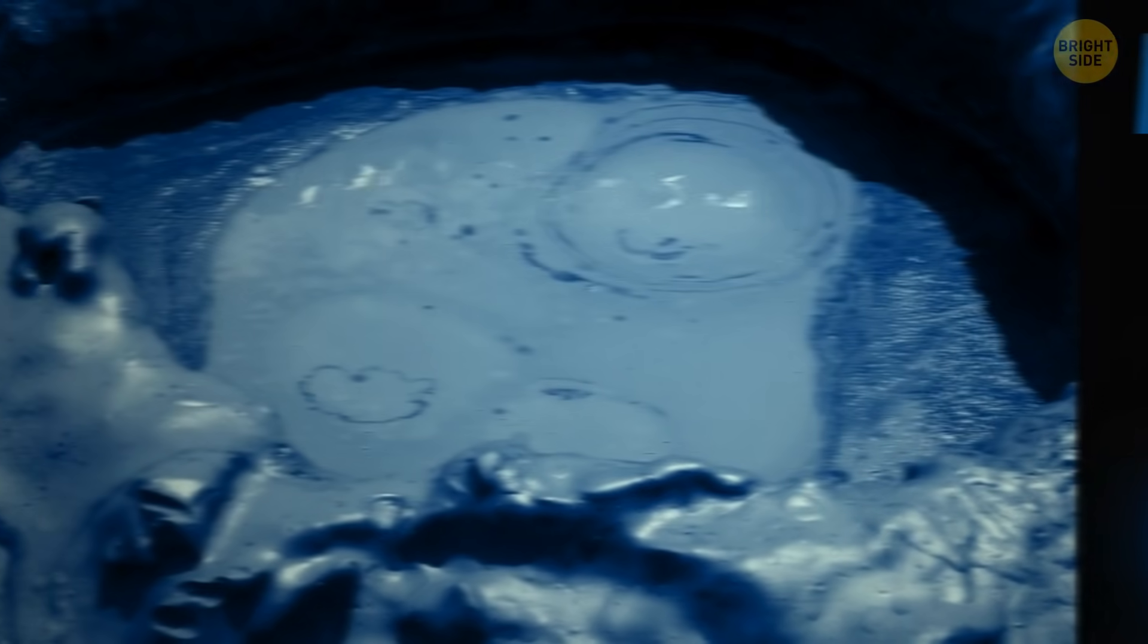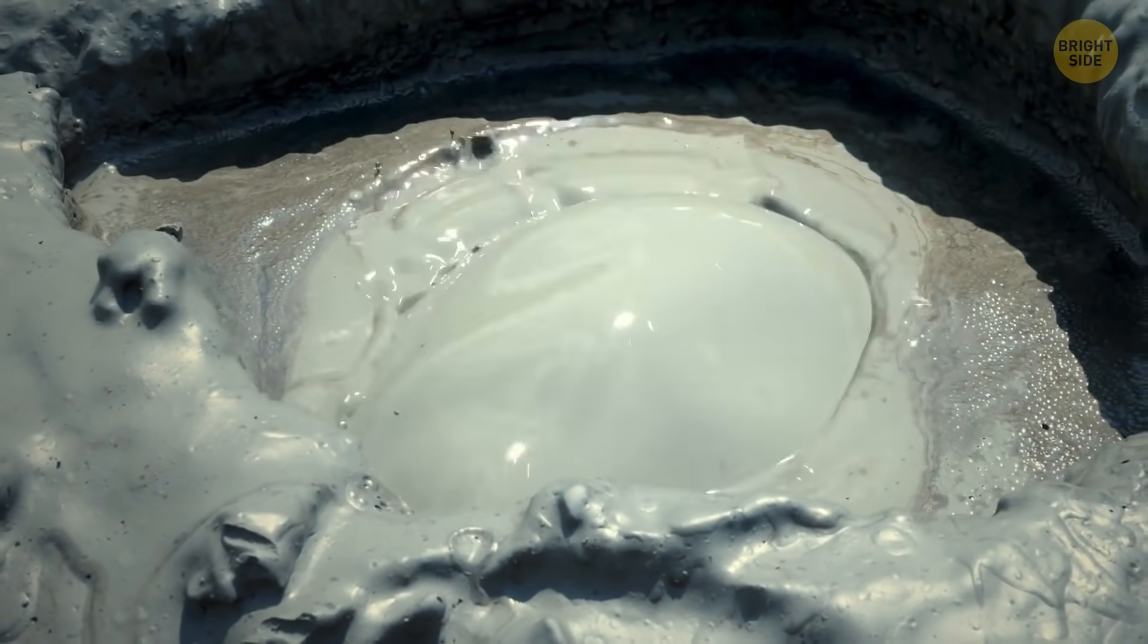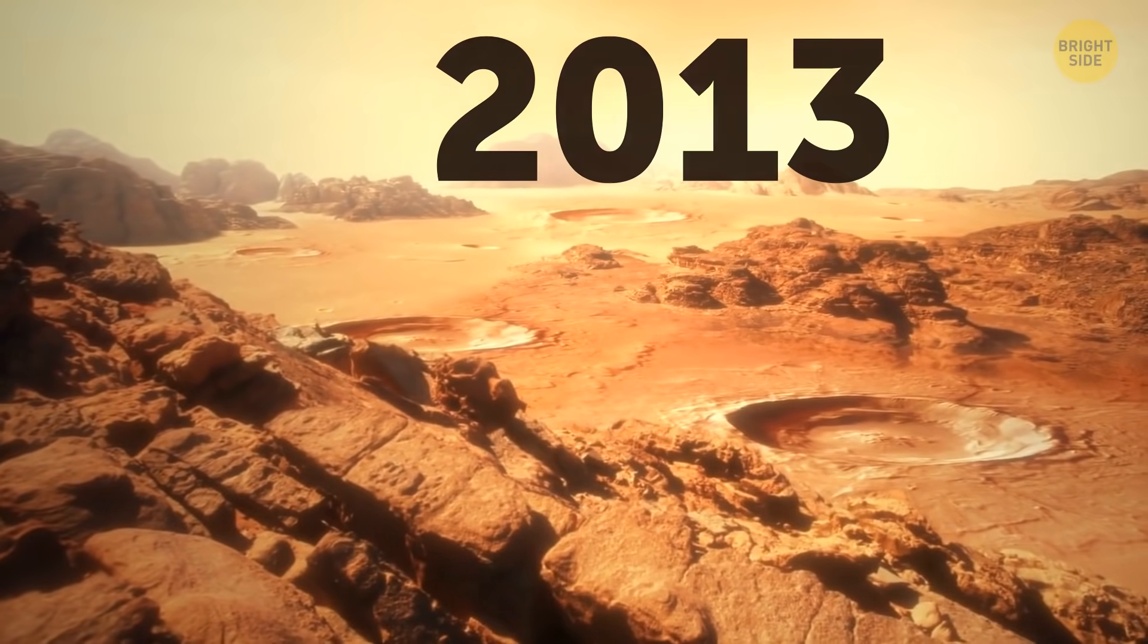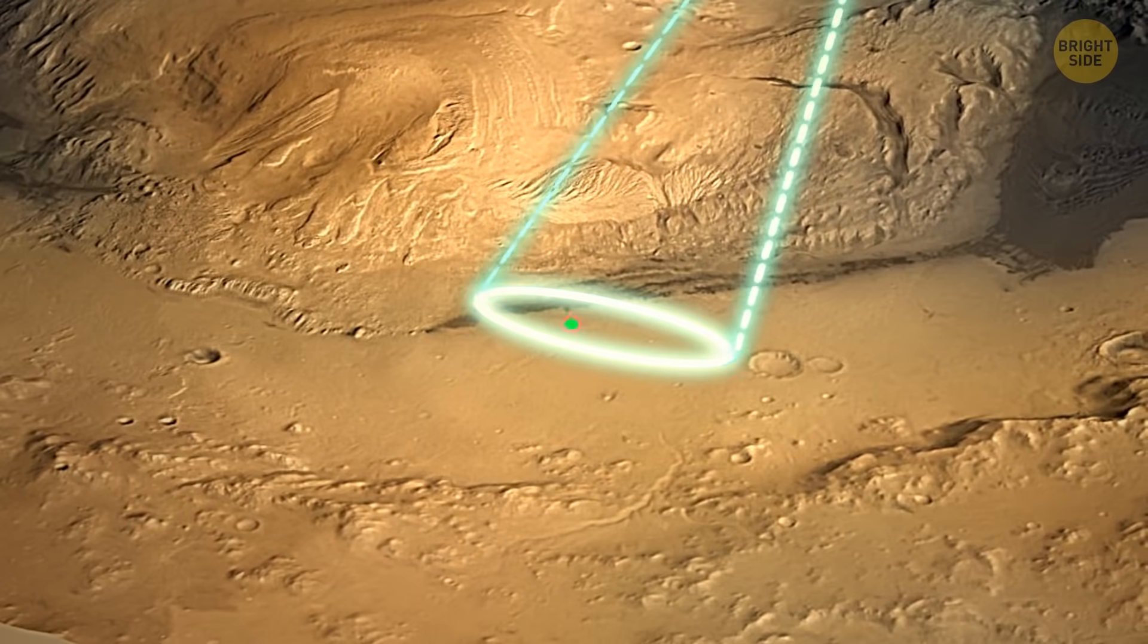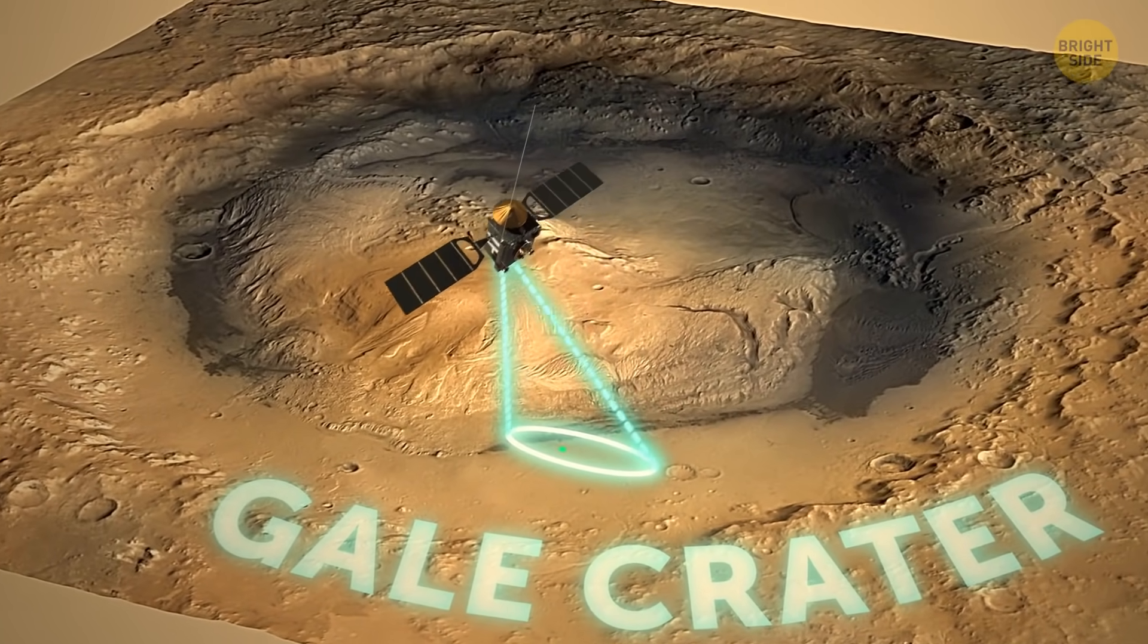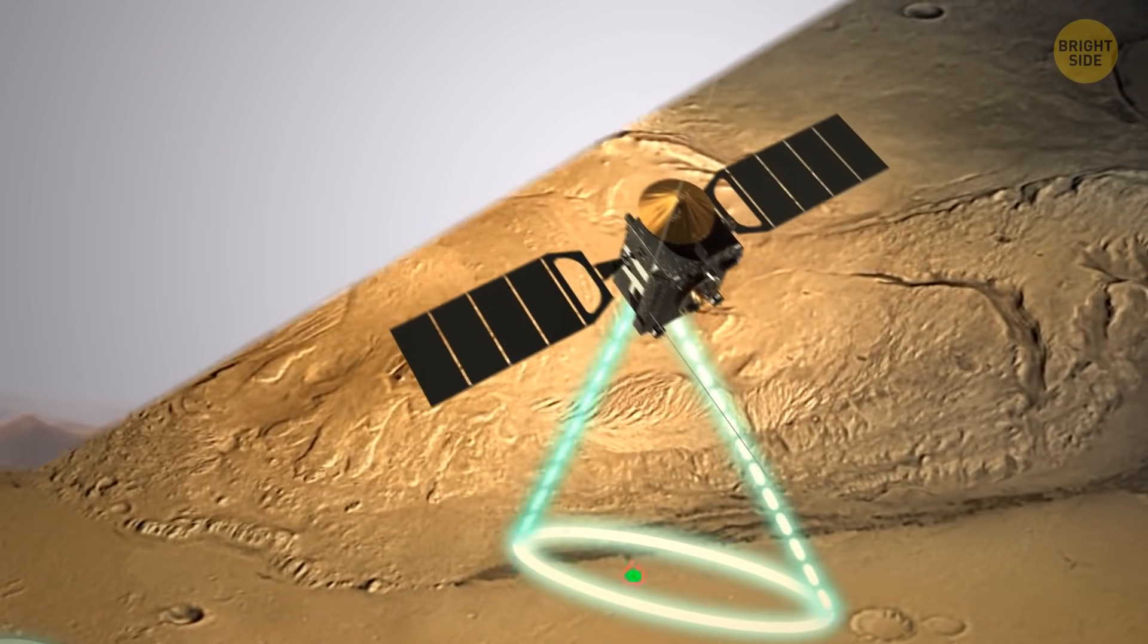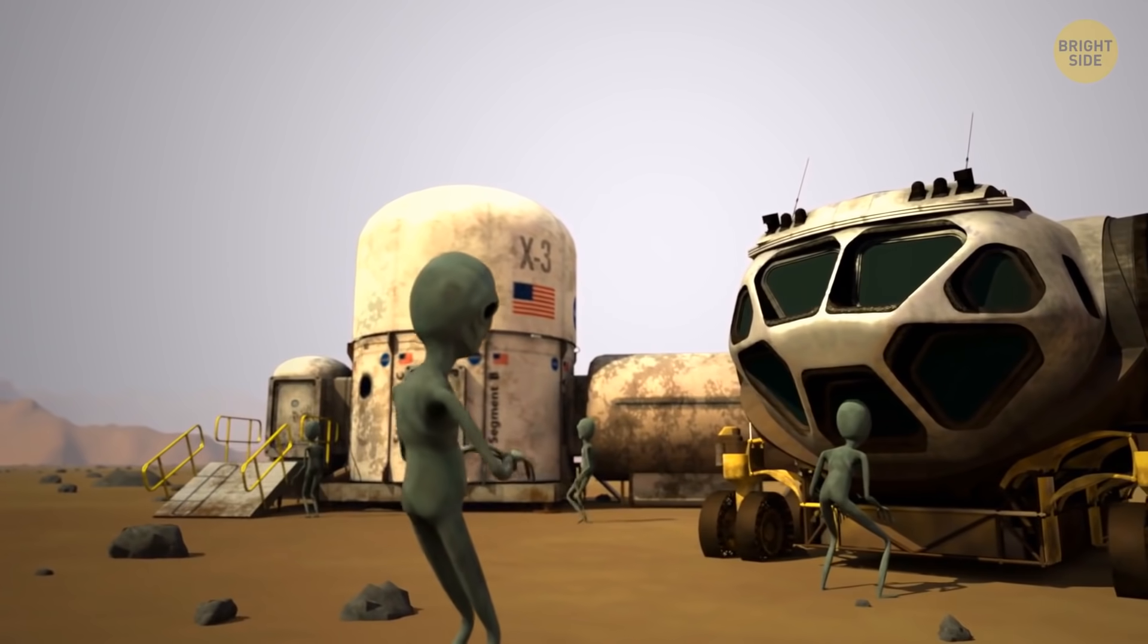Methane, a gas that's usually produced by living things, was found on Mars in 2013. European Space Agency's Mars Express spacecraft detected it in Gale Crater near the Martian equator. This discovery might one day answer the question if there's life on Mars.